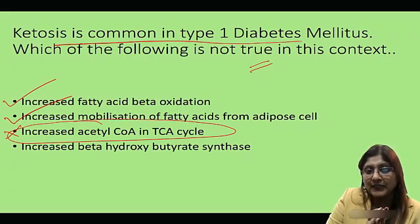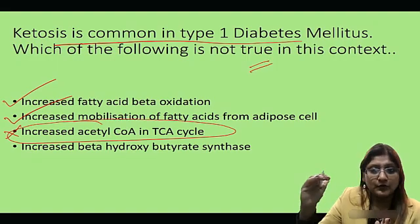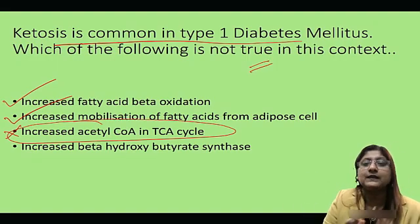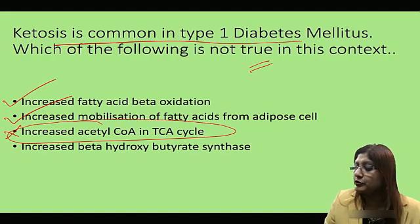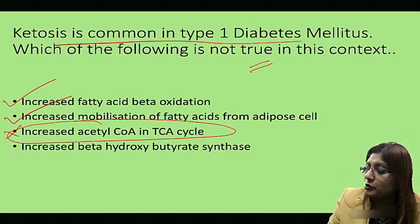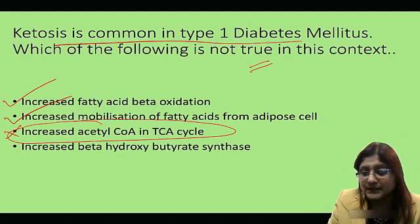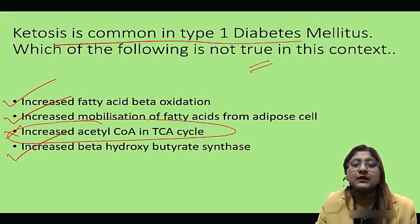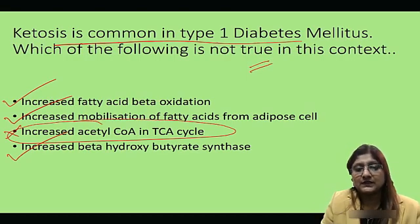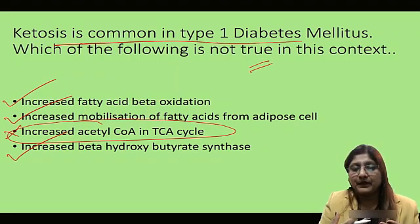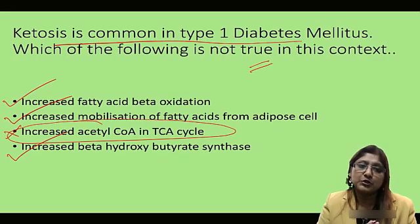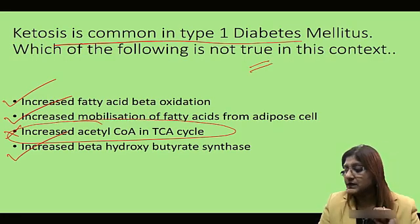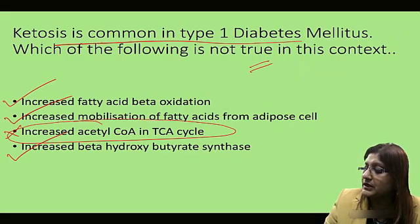The TCA cycle co-substrates like NAD and FAD become saturated, so acetyl-CoA is not allowed to enter the TCA cycle — rather it is diverted for ketogenesis. So what is not true is 'increased acetyl-CoA in the TCA cycle.' Increased beta-hydroxybutyrate synthase is an absolutely right statement, because in ketoacidosis this enzyme is upregulated as more beta-hydroxybutyrate is formed when acetyl-CoA is converted to beta-hydroxybutyrate.